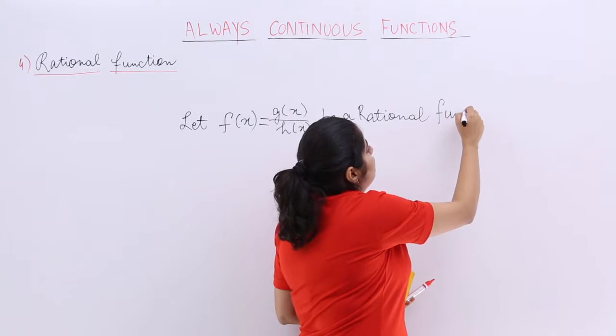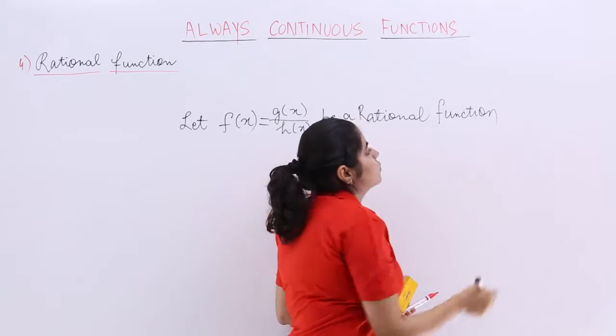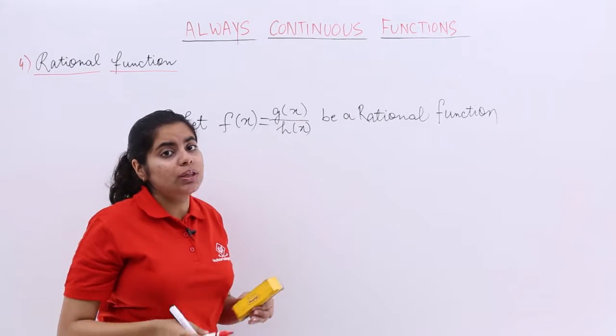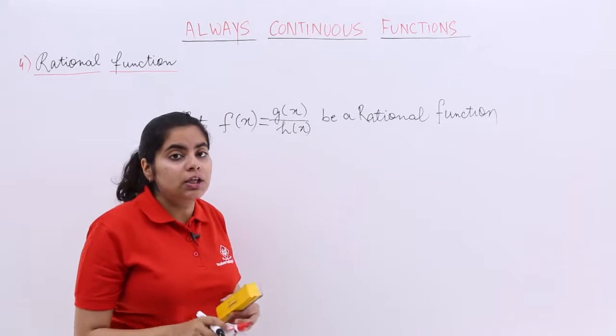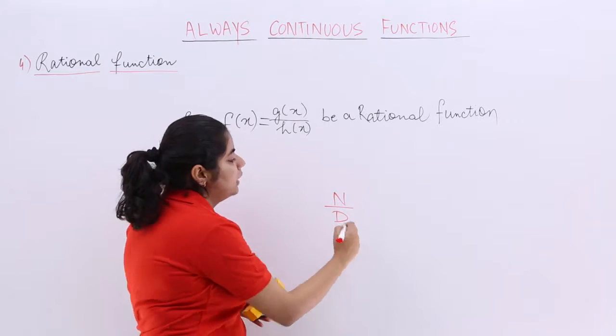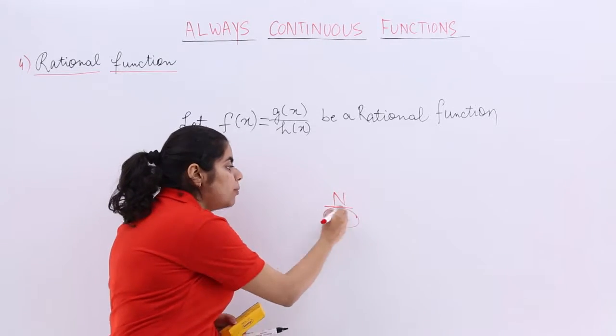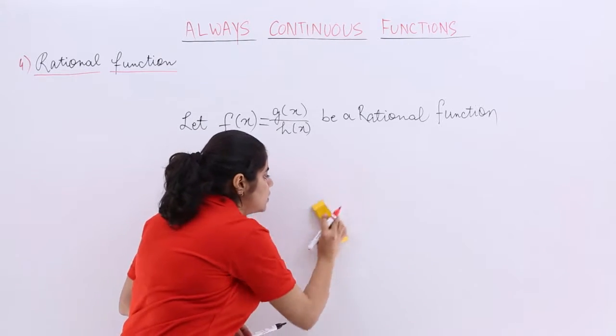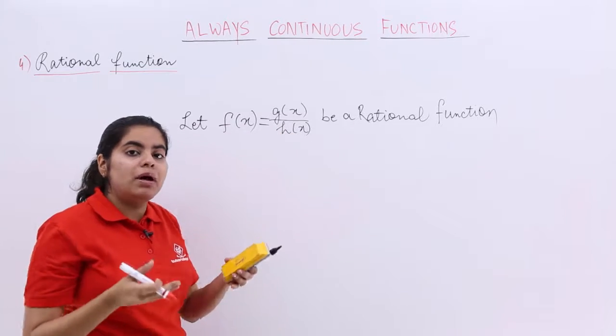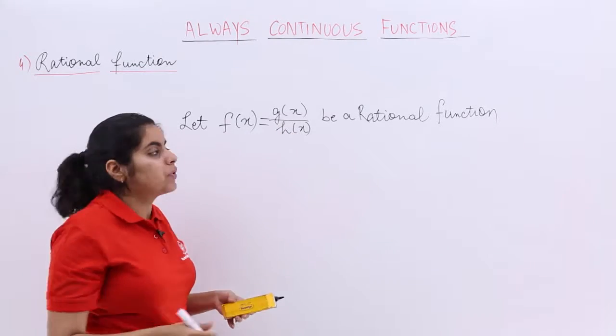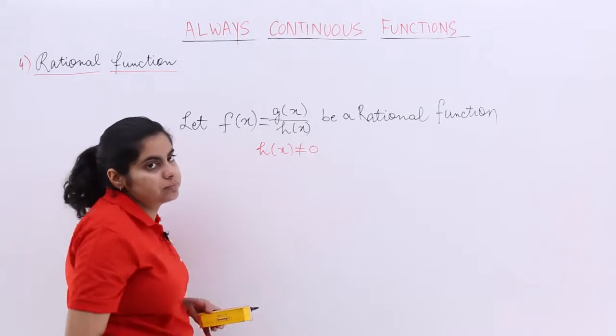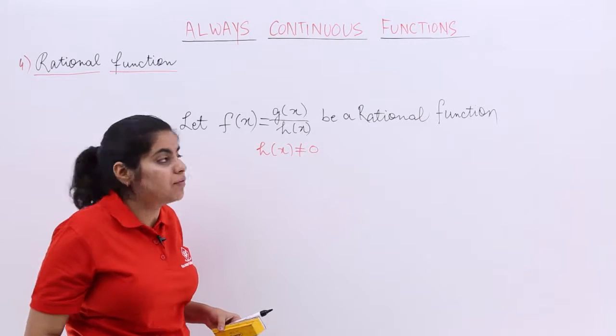Let f(x) = g(x)/h(x) be a rational function. Now, what condition needs to be applied on the denominator? In any numerator upon denominator form, the denominator should never be equal to zero. Why? Because if the denominator equals zero, my function would not be defined. So I have a condition that h(x) should not equal zero. That is the only condition.